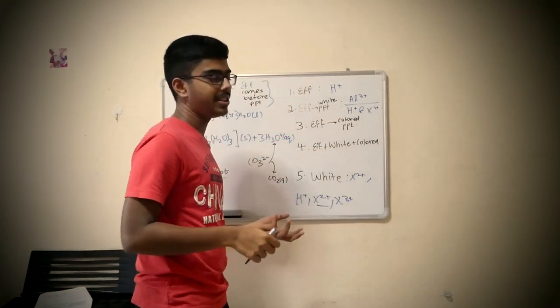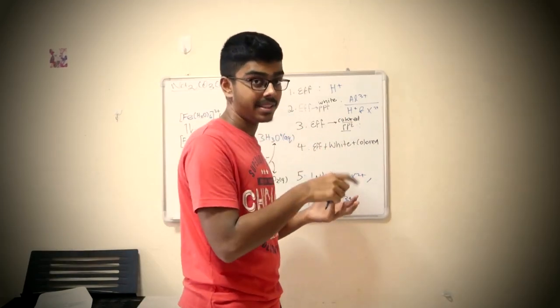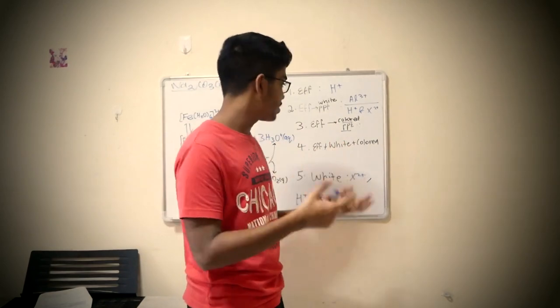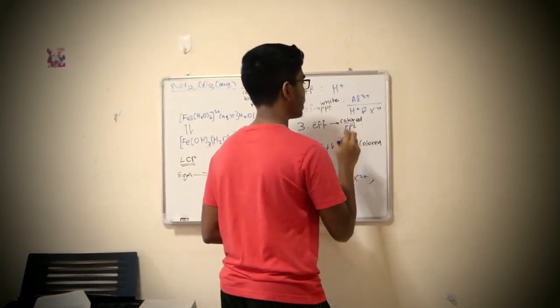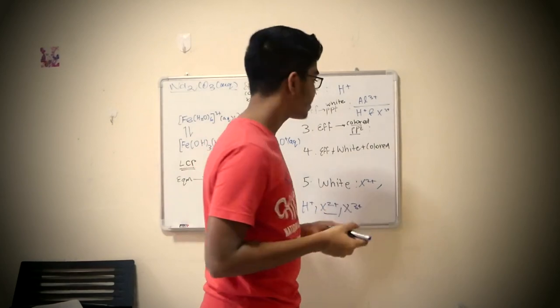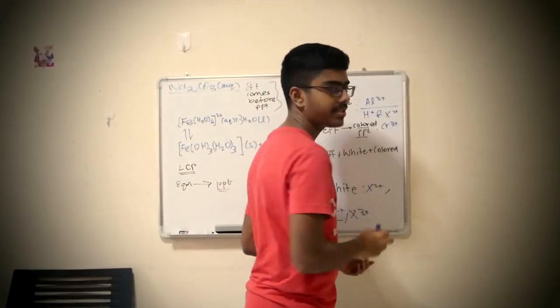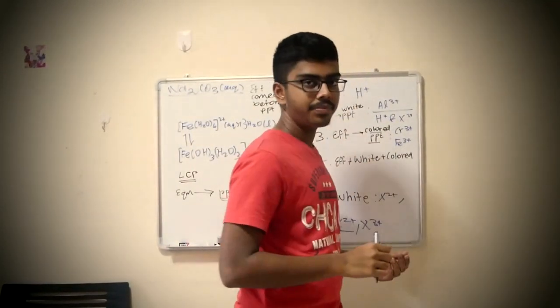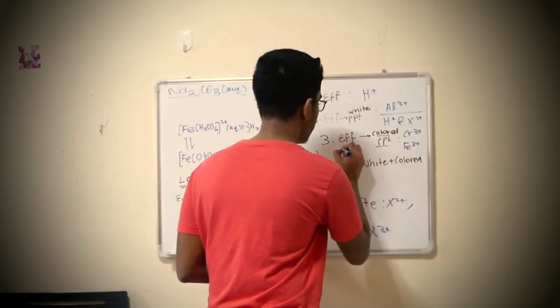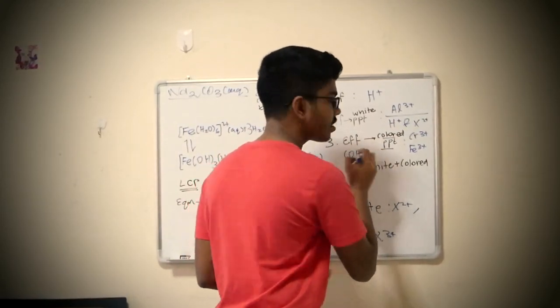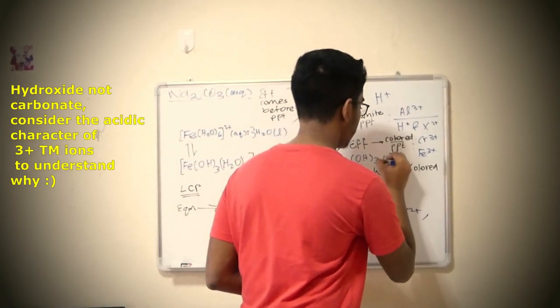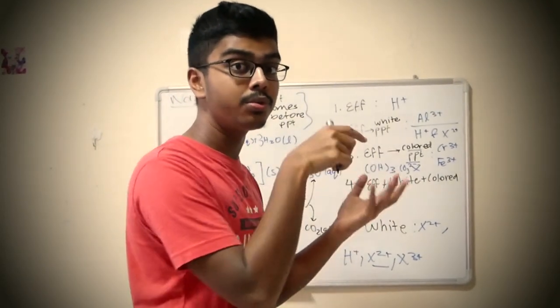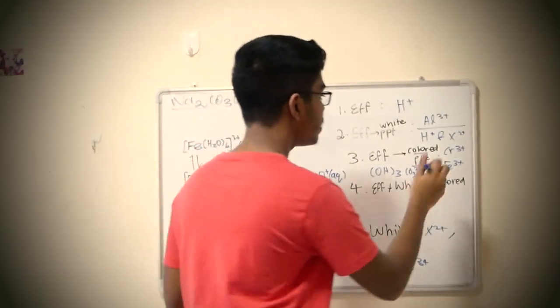Now effervescence for a colored precipitate. When this is a transition metal 3+ ion with a 3+ charge, the solution will be acidic and will react with CO3 2- to form CO2. So there's effervescence and a colored precipitate. What are the two ions that are in the syllabus? Chromium 3+ and Fe3+. Both have different colors. And this one will be chromium hydroxide, not carbonate. Not carbonate. A lot of people will put carbonate and that is wrong.